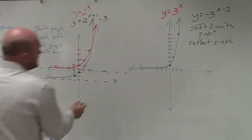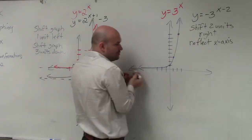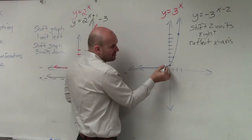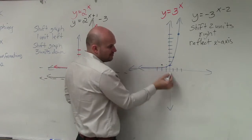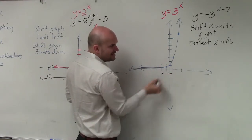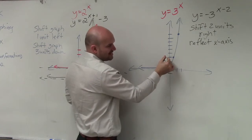Since I've already created a table to graph this, all I'm going to do is take the points, shift them over 2, and then reflect them over the x-axis. Shift over 2, reflect over the x-axis.